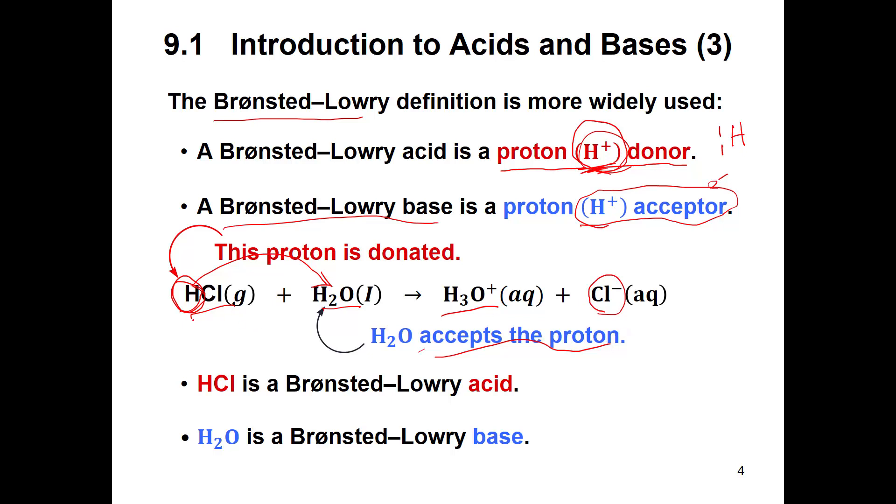So in this reaction, hydrochloric acid is a Bronsted-Lowry acid because it's donating a proton, and water is a Bronsted-Lowry base because it accepts the proton. Make sure you know the difference between the Bronsted-Lowry and Arrhenius definitions. Basically they're the same for acids, but in Bronsted-Lowry you accept a proton to be a base; in Arrhenius you produce hydroxides.